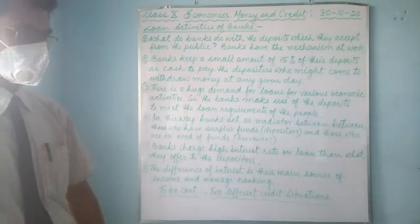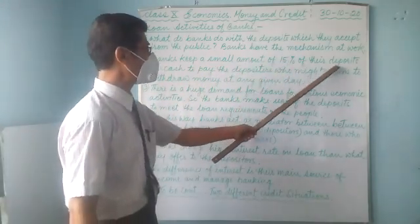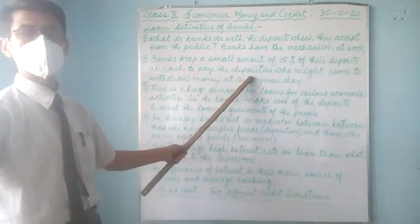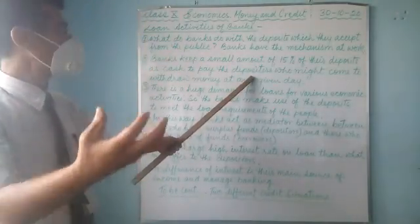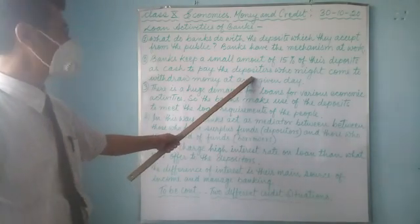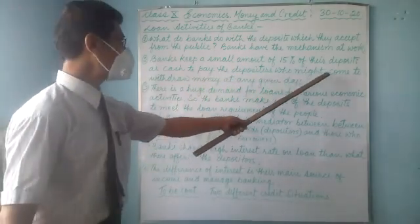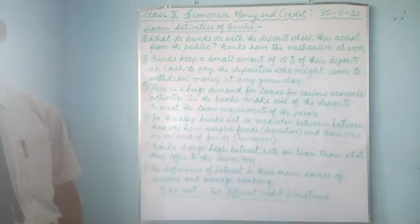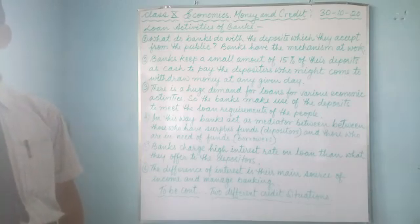You can see the banks keep only a small amount — that is 15% of their deposits — as cash, to pay the depositors. If a person goes to the bank to withdraw money, naturally the bank must have the money. From that 15%, they provide money to depositors who might come to withdraw at any given time or on any day.